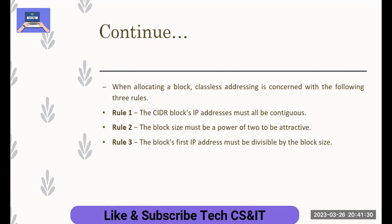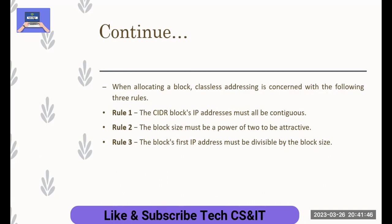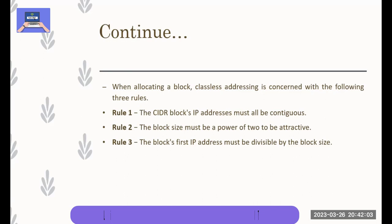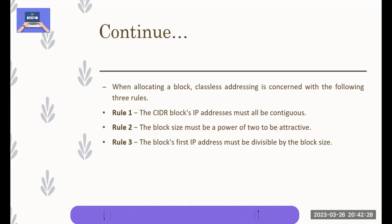The third rule is that the first IP address of the block must be divisible by the block size. For example, if the block size is 16 and the first IP address is 200.10.20.32 — then 32 is divisible by 16, so this is valid. We assign IPs starting from that address. So these are the three basic rules for classless addressing.